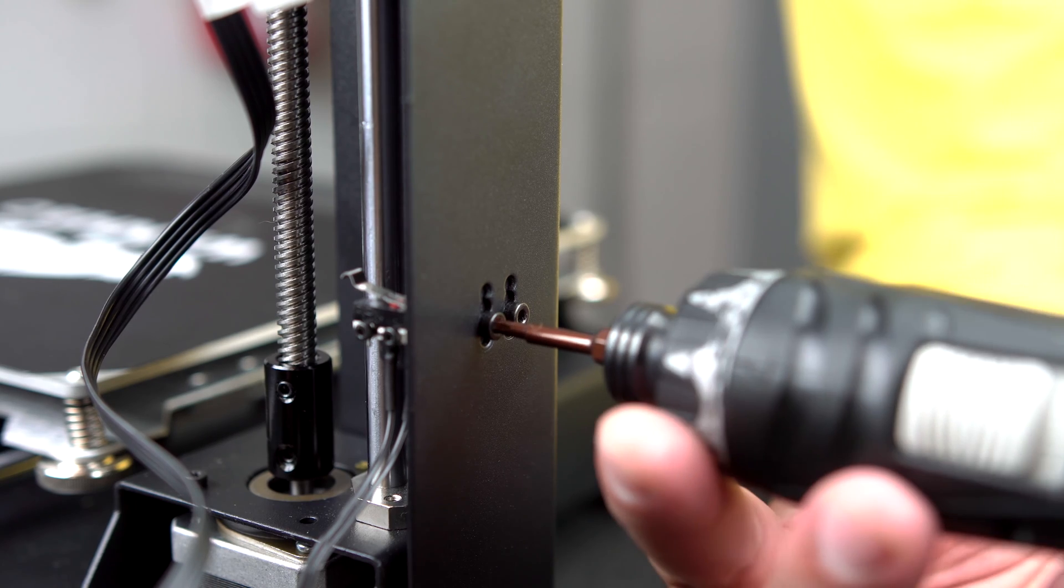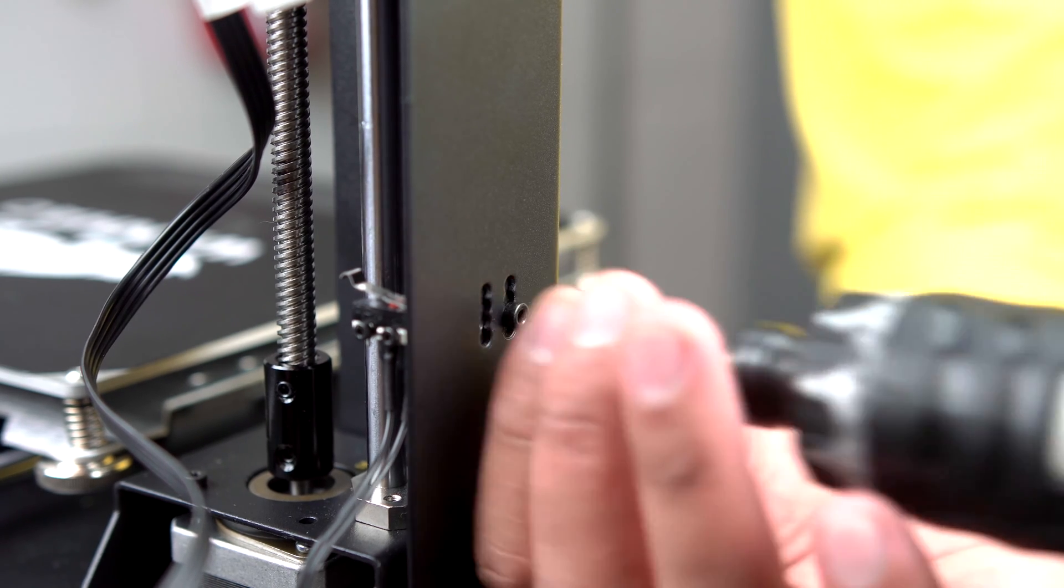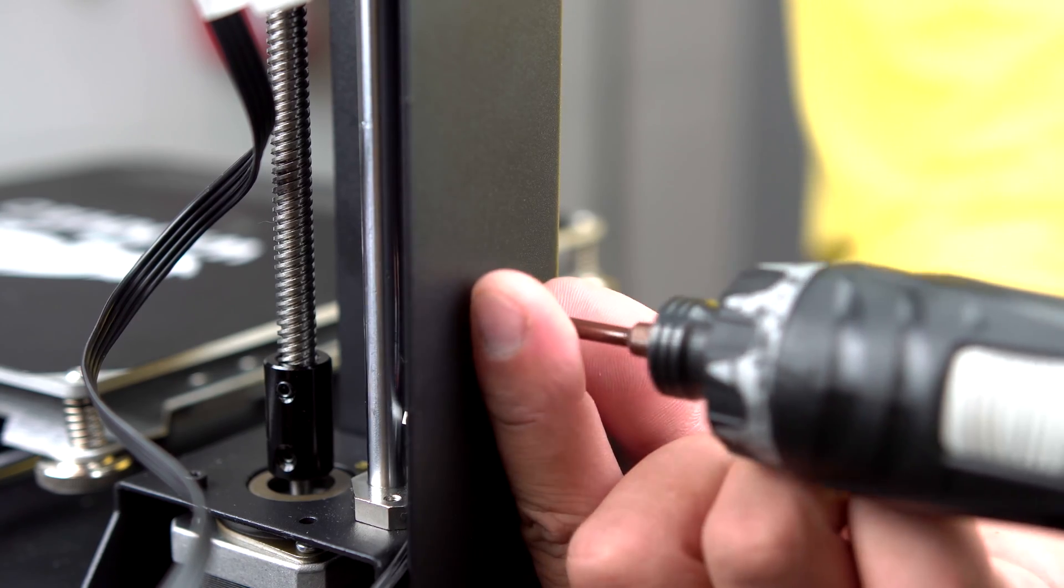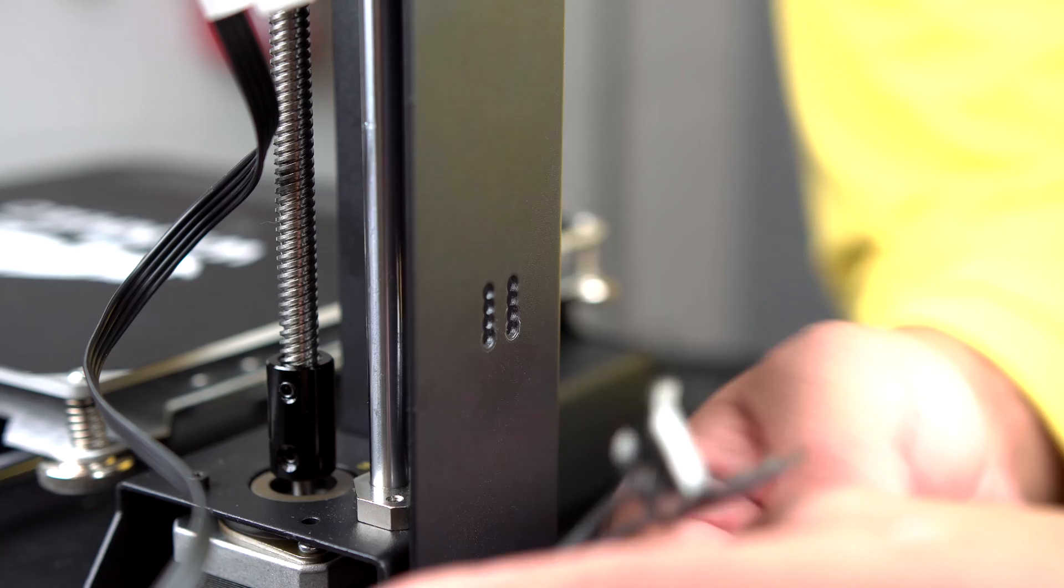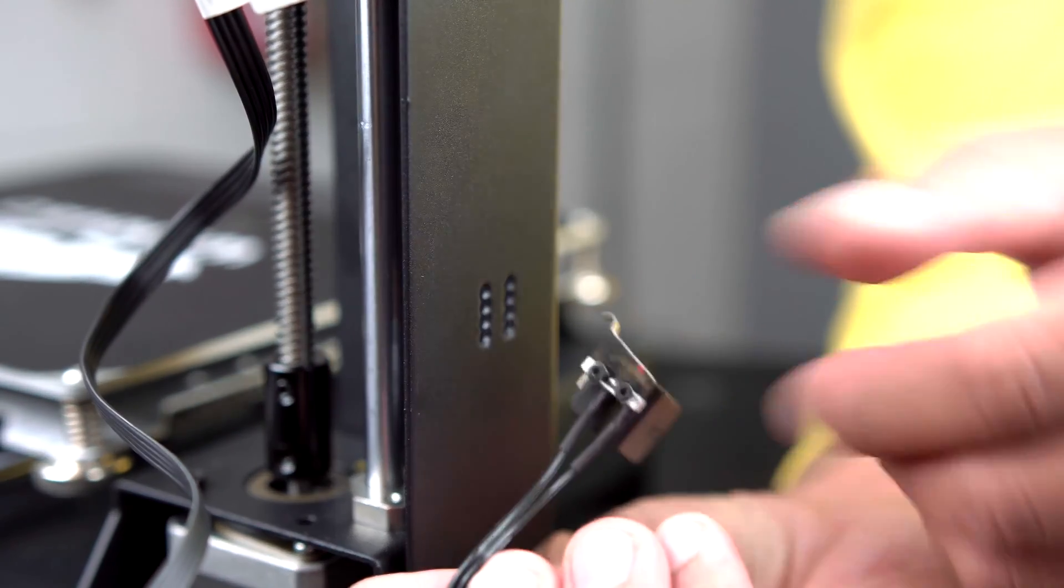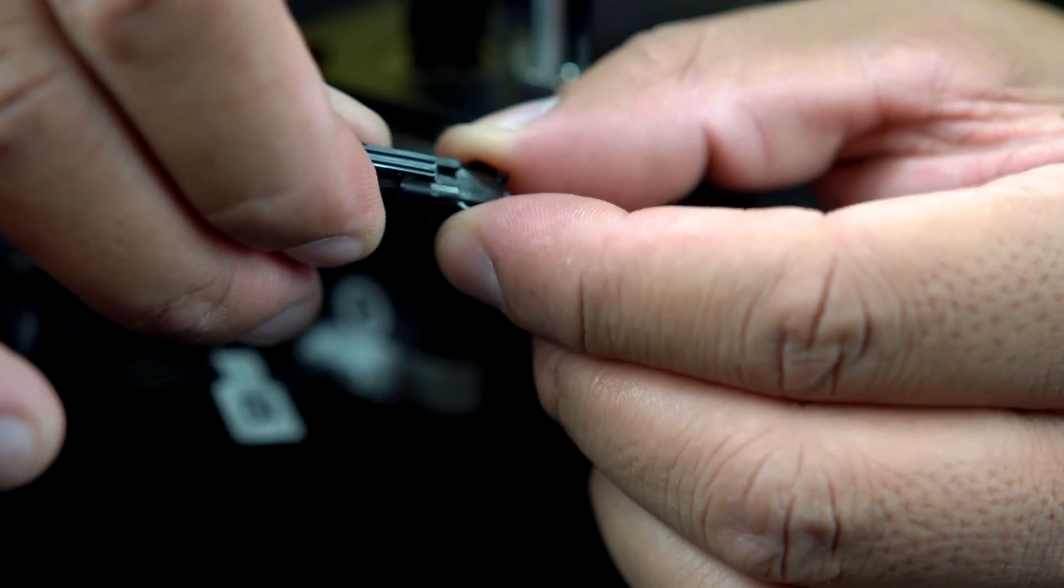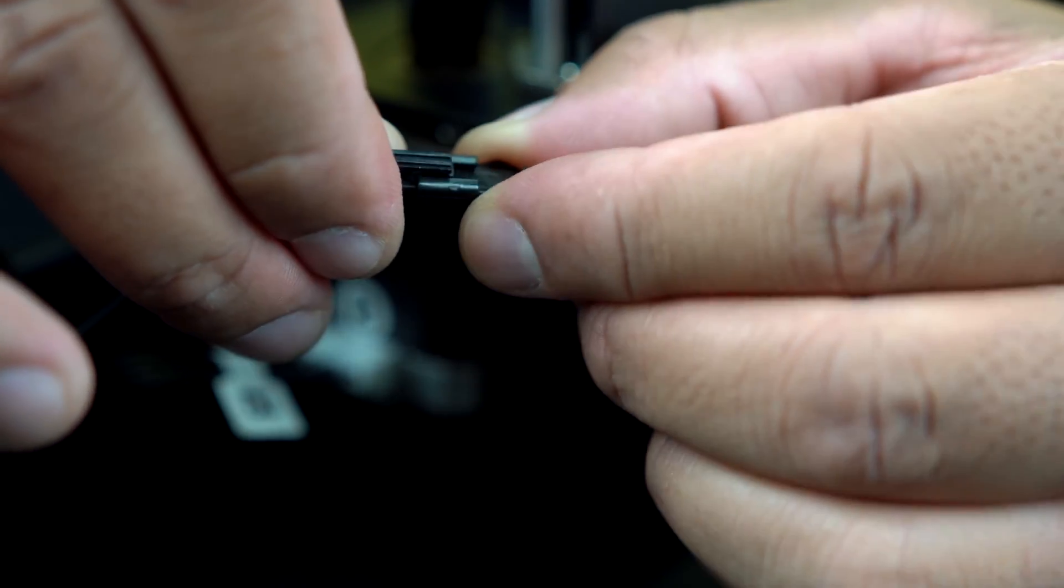Now use the 1.5 millimeter hex key to remove the two screws holding the end stop switch to the left frame. Disconnect the end stop switch from the end stop switch cable.